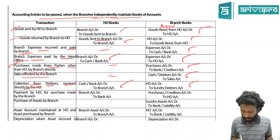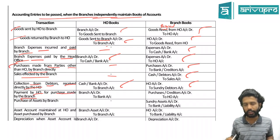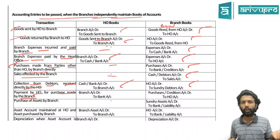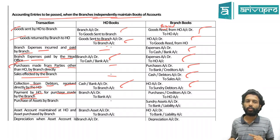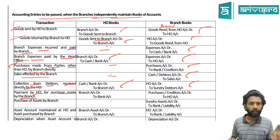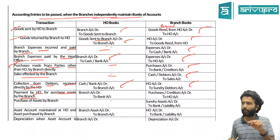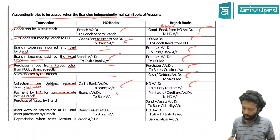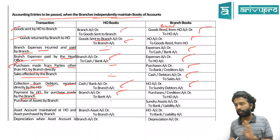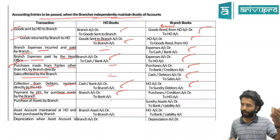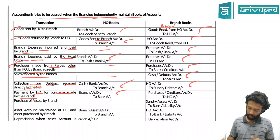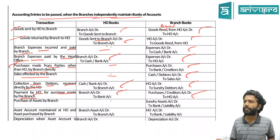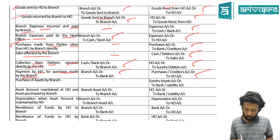Payment by head office for a purchase made by the branch. Whose purchase? Branch. Who paid? HO. HO entry: Branch Account debit to Cash or Bank Account. Branch entry: Purchase Account debit to HO Account - they cannot credit cash since they did not pay, so they credit HO. Effectively the combined entry is Purchase to Bank, but it gets routed through the two sets of books.